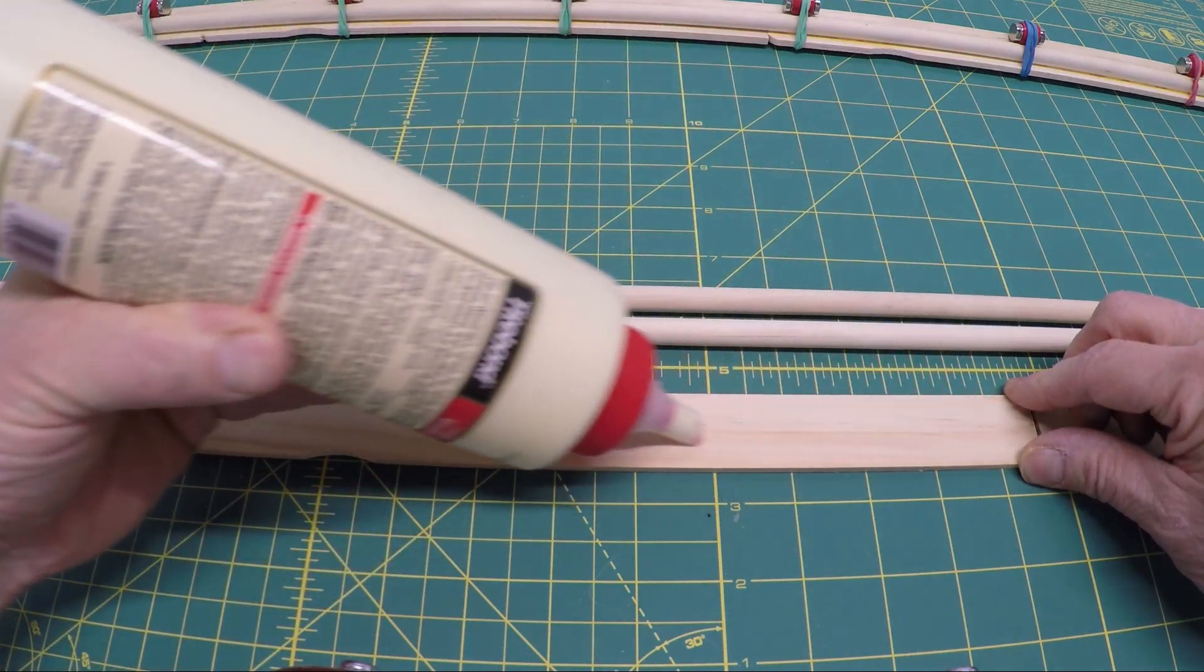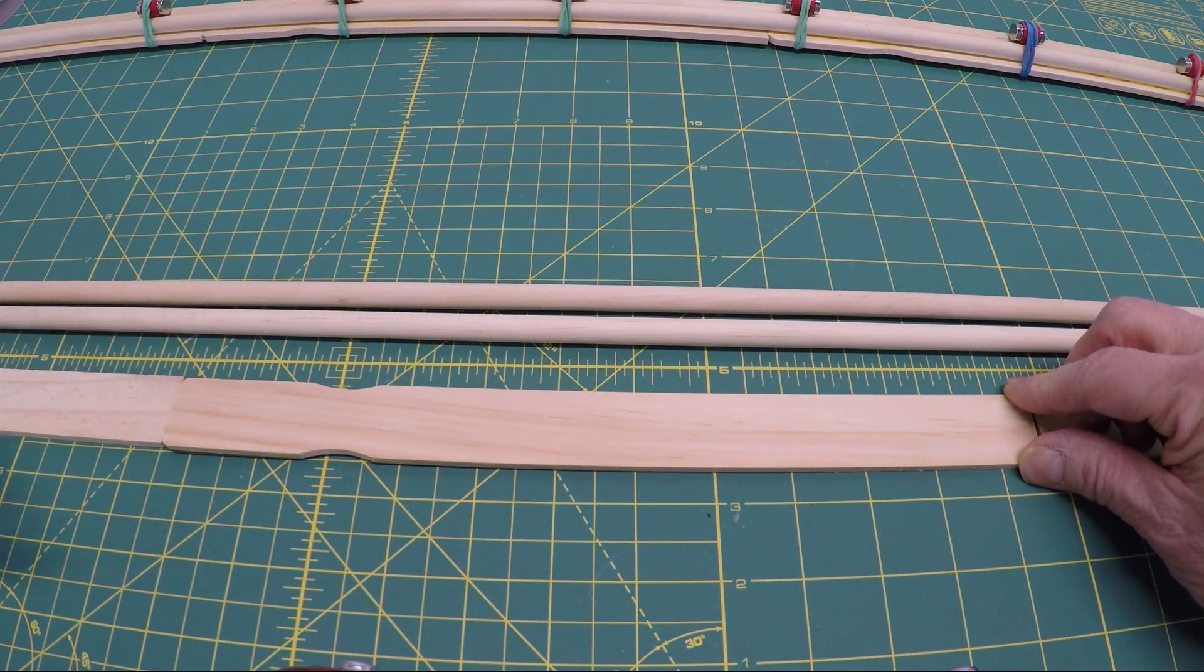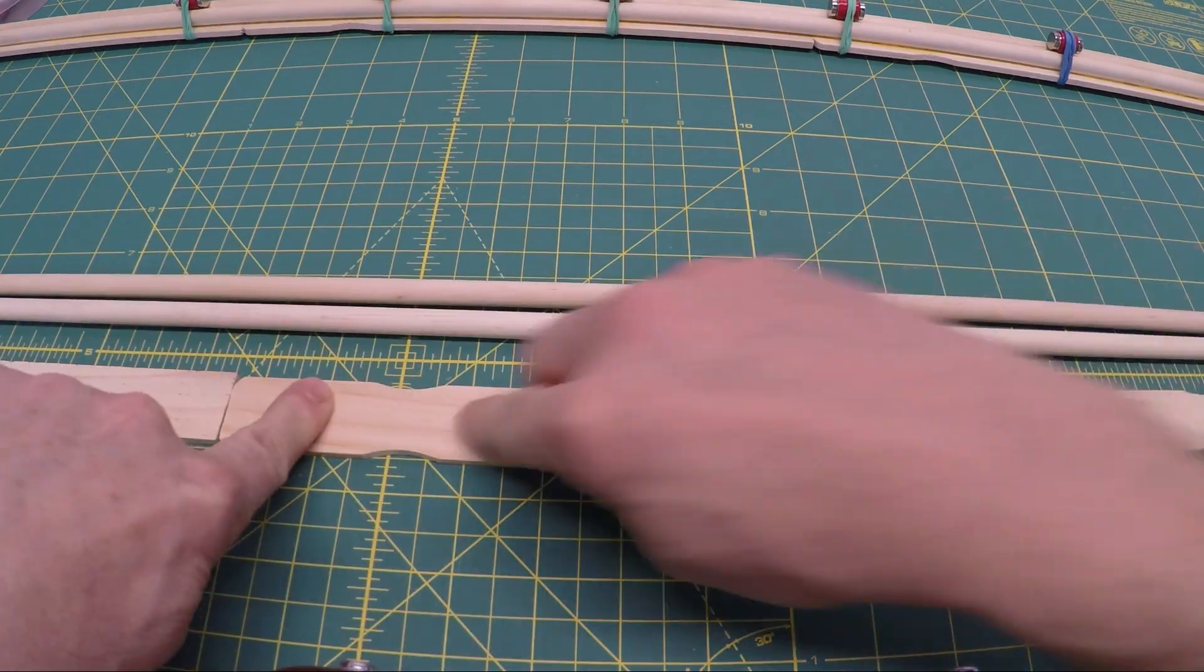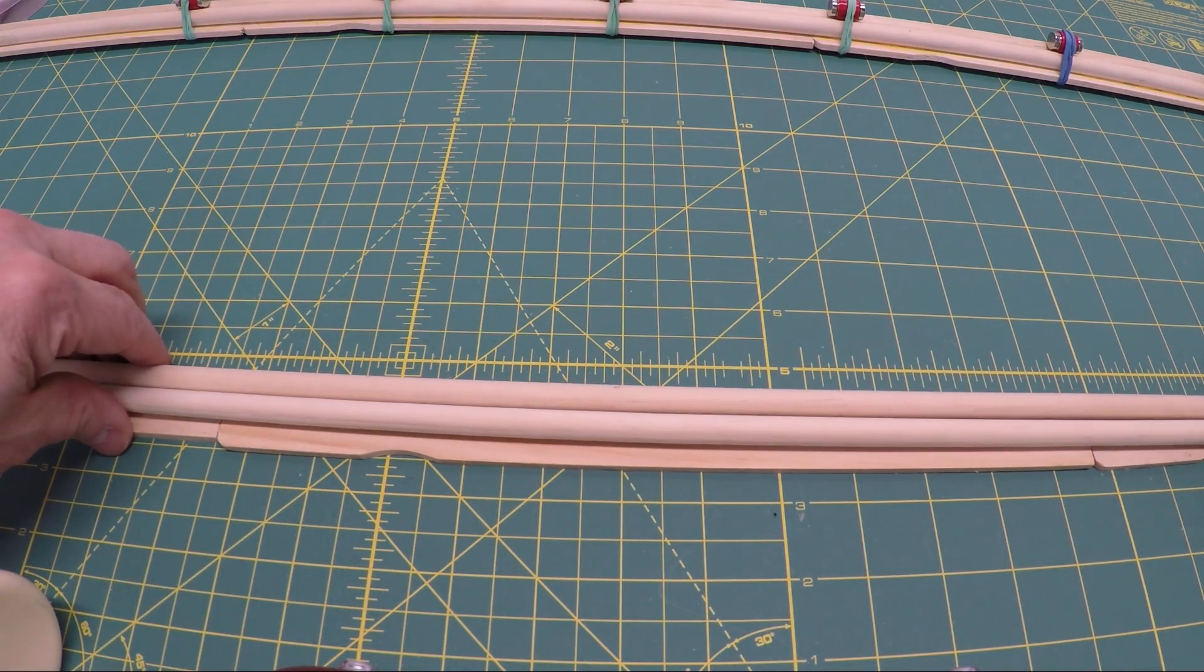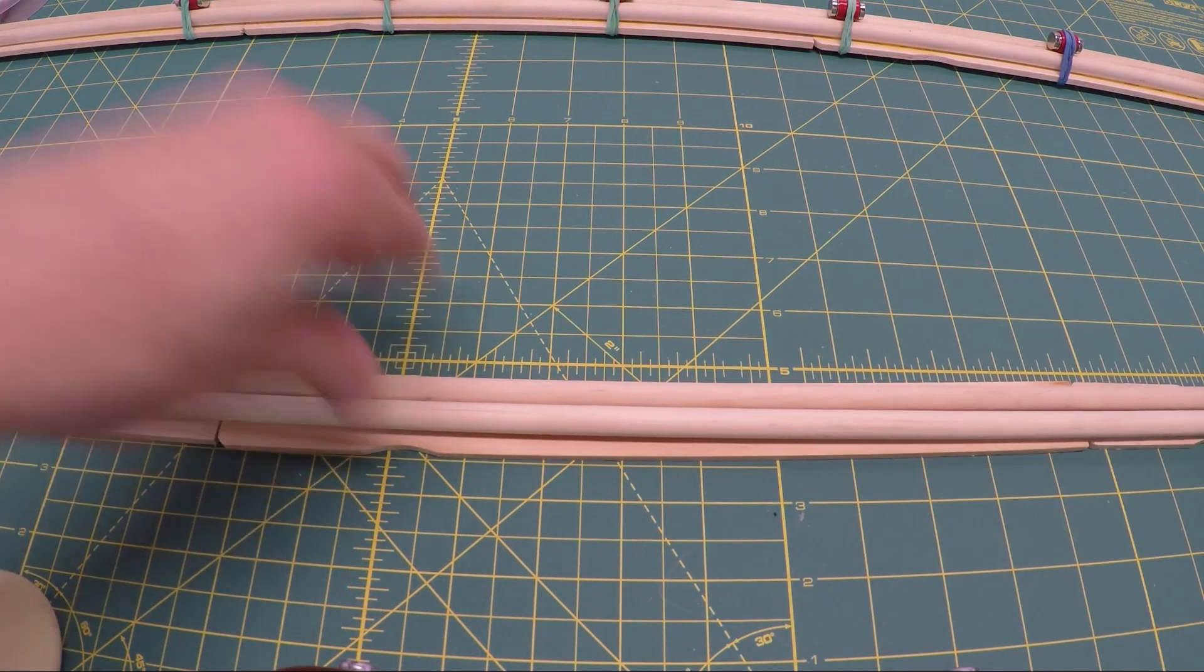Lay down a thick line of glue down the center of the paint stirrer. Spread it smooth. Put the dowels here. Straighten it out. Clamps are also helpful and there you have your track.